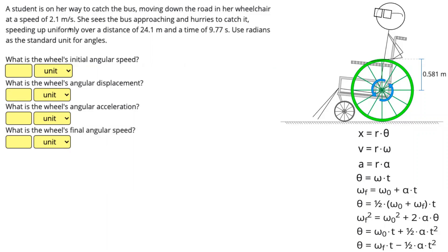In this question, a student is on her way to catch the bus, moving down the road in her wheelchair at a speed of 2.1 meters per second. She sees the bus approaching and hurries to catch it, speeding up uniformly over a distance of 24.1 meters and a time of 9.77 seconds.